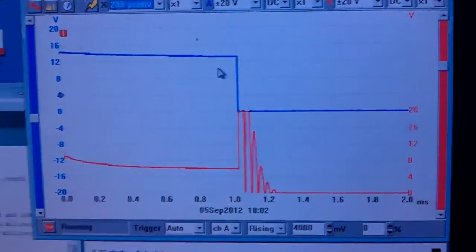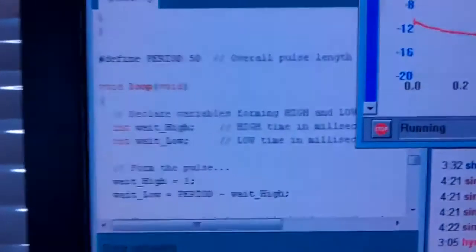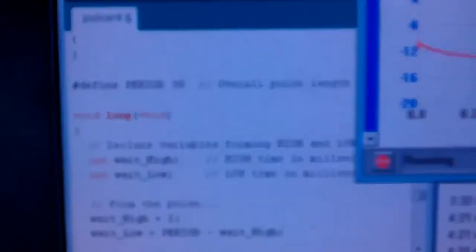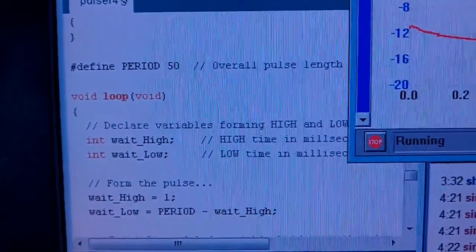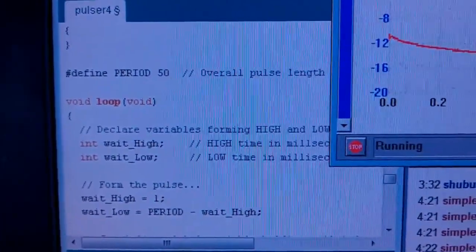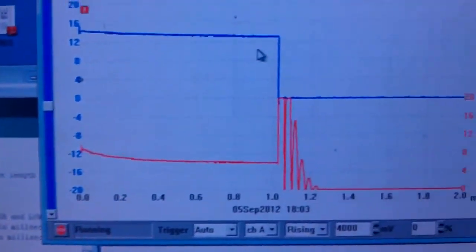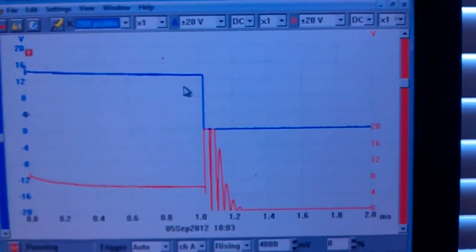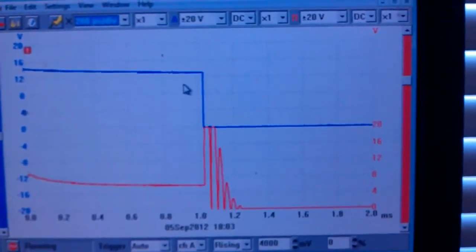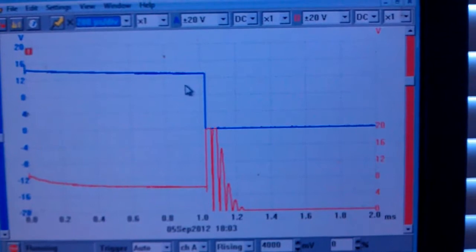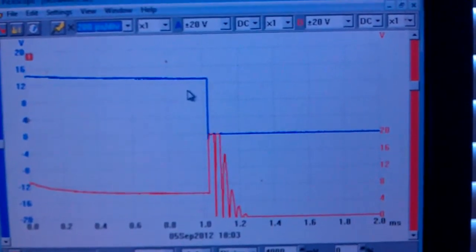Incidentally, the pulse period is 50 milliseconds, with an on time of one millisecond giving a two percent duty cycle. So, of the 50 millisecond pulse period, this oscilloscope is only showing the first two milliseconds.